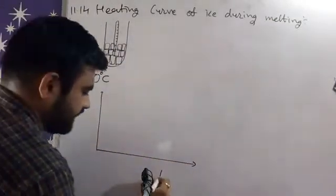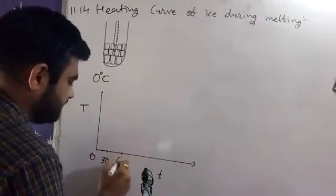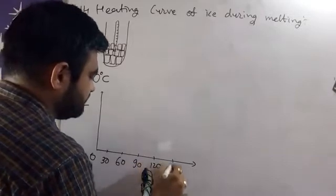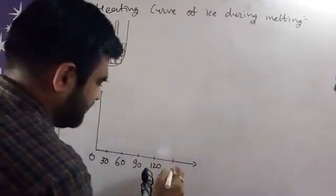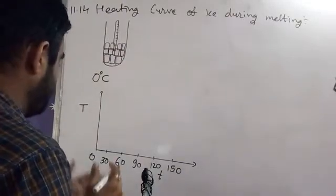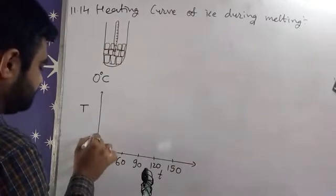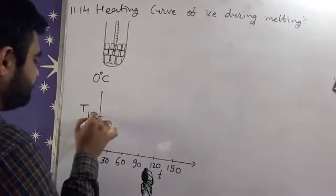Temperature versus time. Time starts from 0, 30, 60, 90, 120, then ahead 150. And temperature is like 0, then 50, then 100, then 150.